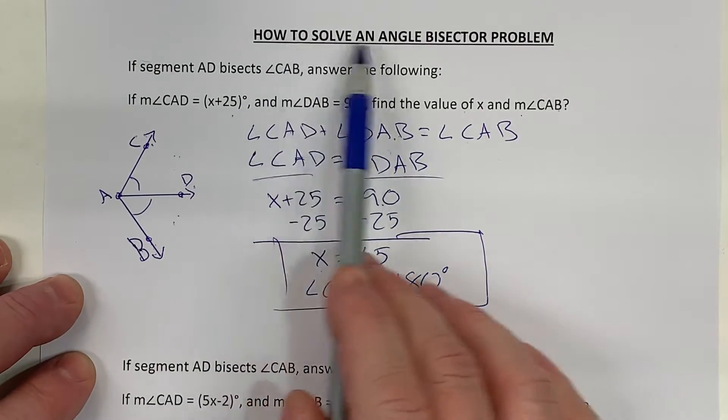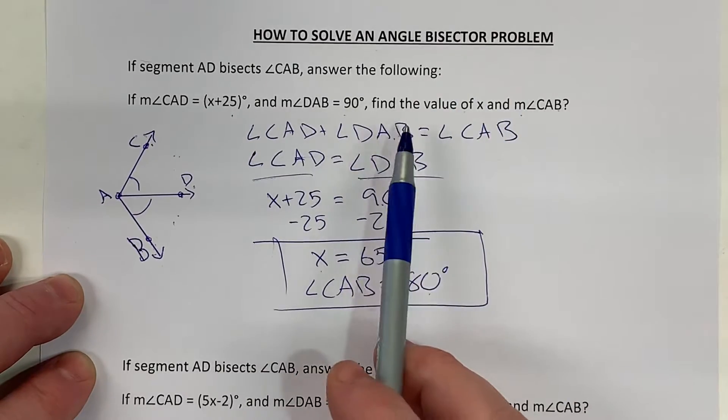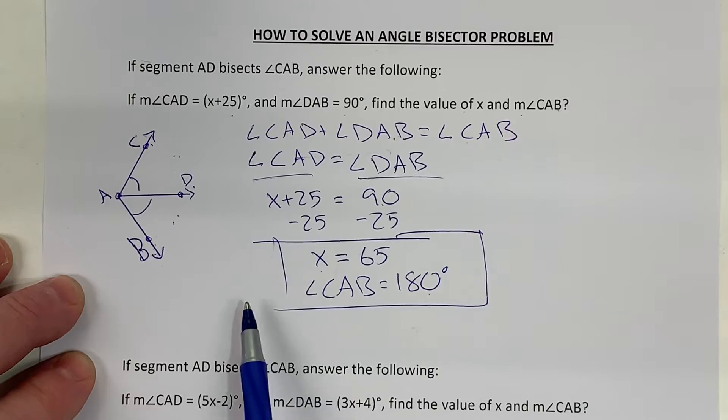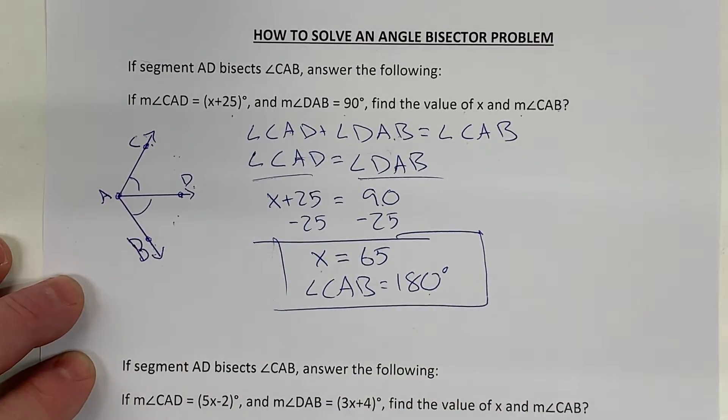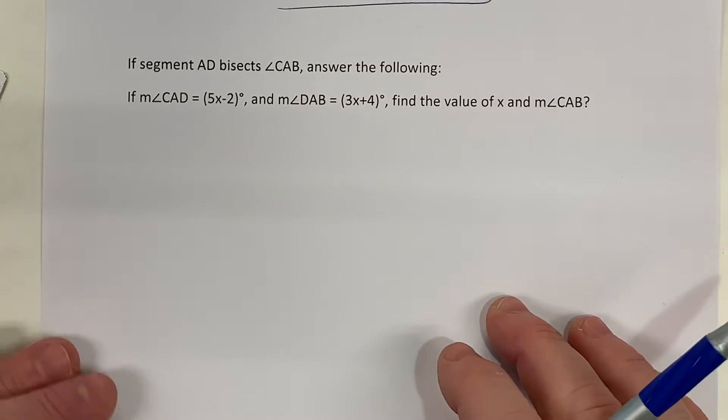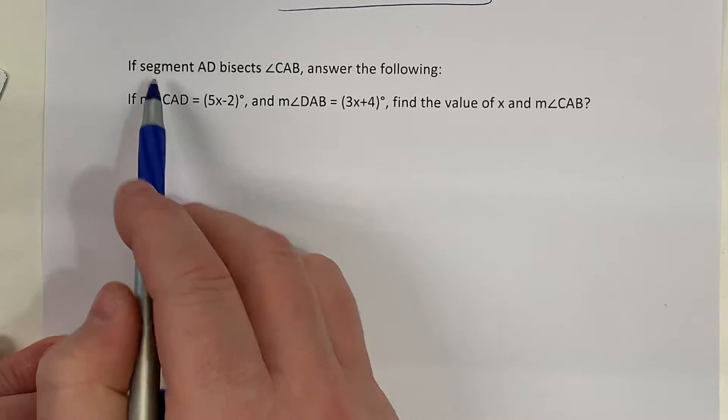Alright, part two. So how to solve an angle bisector problem. The first one we did was a pretty straightforward angle bisector. Now we're going to do a more complicated angle bisector. The setup's the exact same thing, so we're going to start off by first drawing the picture.